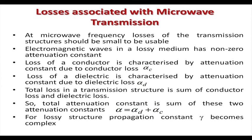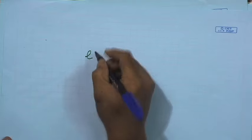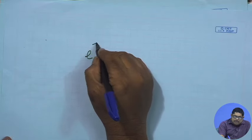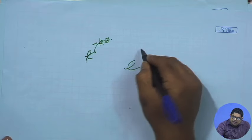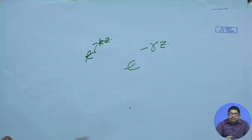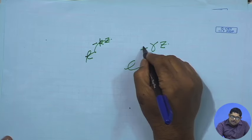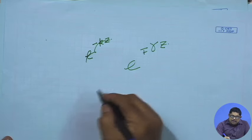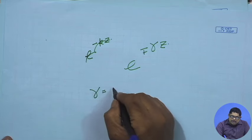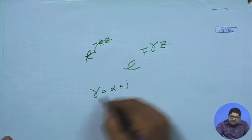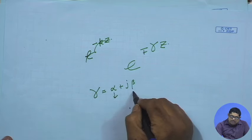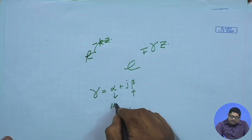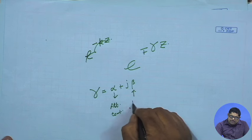Electromagnetic waves in a lossy medium have a non-zero attenuation constant. Generally, any wave traveling in the plus-z direction has a variation e^{-γz}, where γ = α + jβ. Here α is the attenuation constant and β is the phase constant — these are from electromagnetic theory. γ is called the propagation constant.